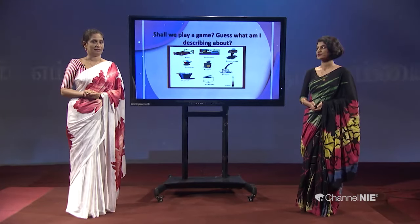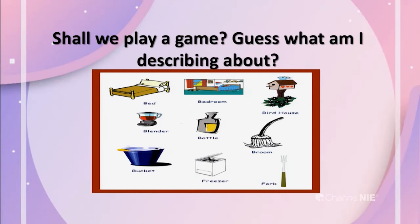In today's game, what is going to happen is I am going to describe an object for you. To make it easy, there are some pictures that you can see on the screen. There is a bed, bedroom, birdhouse where the birds live, broom, bottle, a blender, bucket, a freezer, and a fork. I am going to describe one of these objects — its colour, size, and what it is made of. You have to guess what the object is.